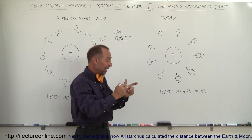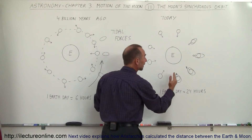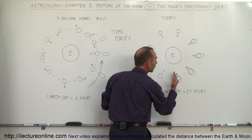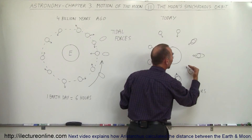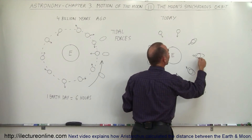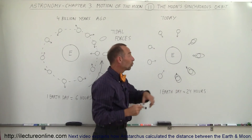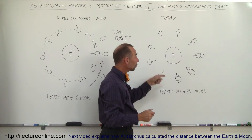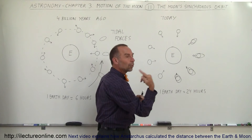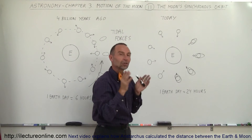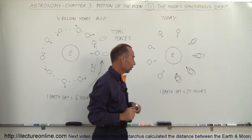Now that frictional force has taken away all that kinetic energy, the Moon just very slowly rotates on its axis at exactly the same rate as it takes to go around the Earth once. When the Moon takes one trip around the Earth, it has turned exactly one time around its own axis, causing the same face of the Moon to always point toward the Earth.